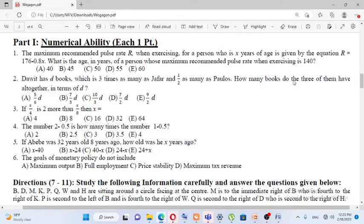So, the equation is that the pulse rate, the maximum recommended pulse rate for exercise, is given by the person's age. The formula of the equation is that R is equal to 176 minus 0.8X. The maximum pulse rate is 140. What is the age in years?